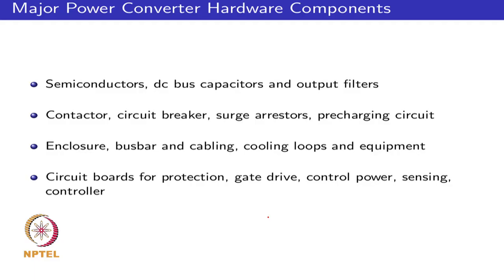There are upfront costs, efficiency-related factors, and reliability factors to consider. Looking at the main components of the inverter: the major components are the power semiconductor devices, the DC bus capacitor for a voltage source inverter, and the output filter. There are many other hardware components such as circuit breakers, contactors, surge arrestors, and pre-charging circuits. Important issues include how the enclosure is built, cabling and bus bar connections within the converter, cooling loops, air exchange mechanisms, and water cooling loops if applicable.